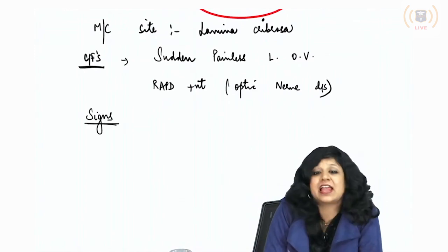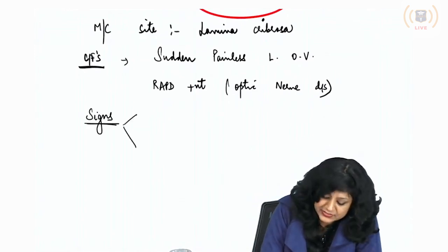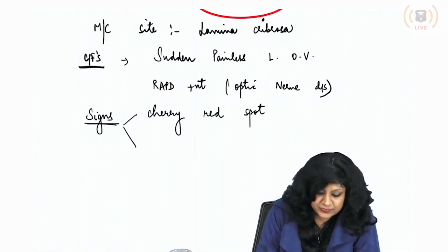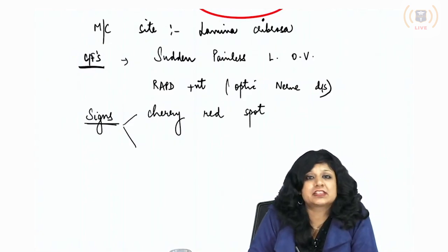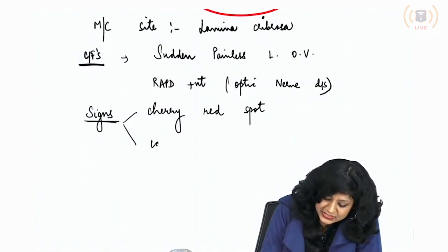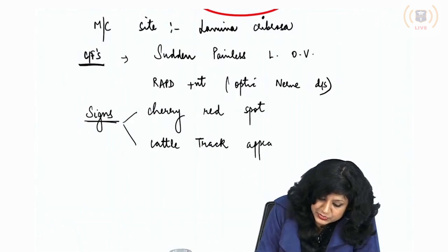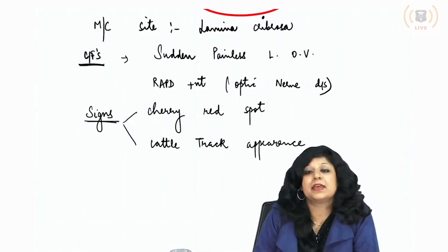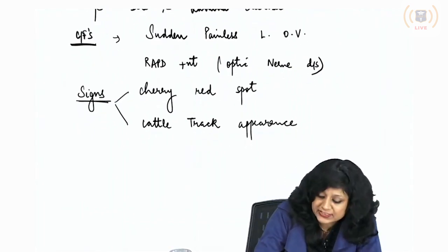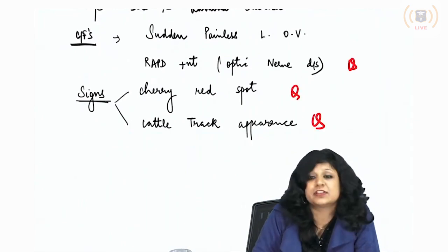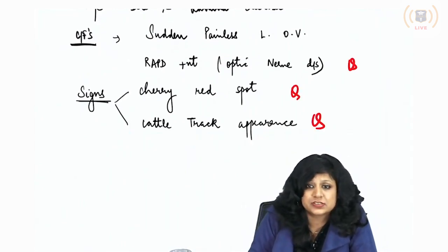There are two important signs in CRAO: one is the cherry red spot, and the second is the cattle track appearance. Cherry red spot and cattle track appearance are two very important signs found in cases of CRAO.